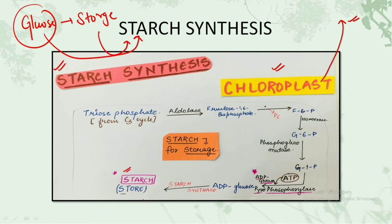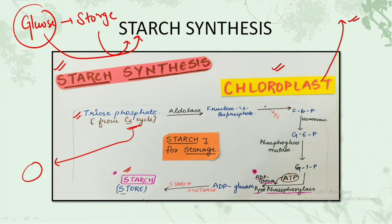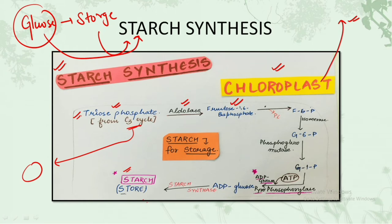When our C3 cycle, that is the Calvin cycle, occurs, triose phosphate is formed. If you don't remember the C3 cycle, I have made a detailed video for the complete photosynthesis process - links will be in the description. So from the C3 cycle we get triose phosphate, and this triose phosphate gets converted into fructose 1,6-bisphosphate by the enzyme aldolase.